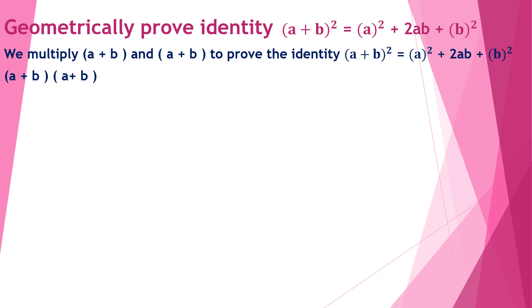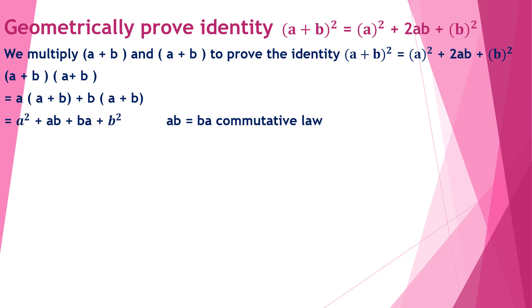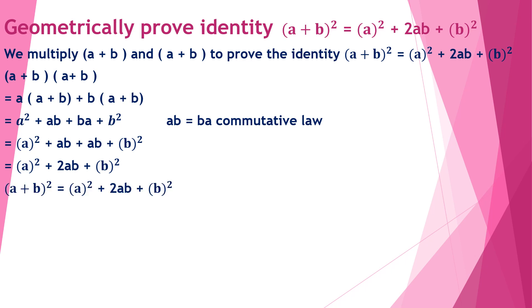Geometrically we have to prove the identity, but let's first do it algebraically. We multiply the two binomials: (a + b) × (a + b) = a(a + b) + b(a + b). Opening the brackets gives a² + ab + ba + b². Since ab = ba by the commutative law, this becomes a² + ab + ab + b² = a² + 2ab + b², which proves the identity.